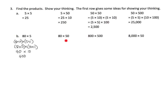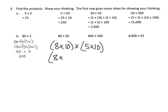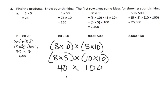Now let's look at 80 times 50. That's 8 copies of 10 times 5 copies of 10. Using the commutative and associative properties, we move things around and regroup to get 8 times 5 times 10 times 10, which equals 40 times 100, which is 4,000 — the idea being we have 40 and we stick on those two extra zeros.